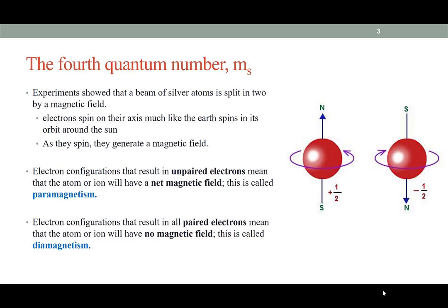It refers to the idea that electrons actually spin on their axes, just like the earth spins on its axis as it circles around the sun. When a charged particle spins, like an electron which has a negative charge, it creates a magnetic field.